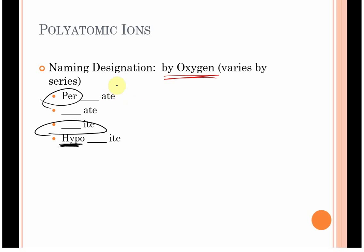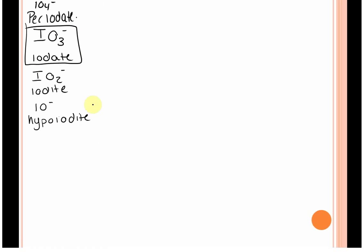If we go up, just like you get hyperthermic, you can have per- and then the rest of the element name stays the same. Now, not every series has all four of these, but some do. But if you know the -ate, I would take the time to memorize the -ates. And if you know the trend, if I know iodate, I know iodite is one less oxygen. So if I know iodate is IO3 minus, IO2 minus must be iodite.